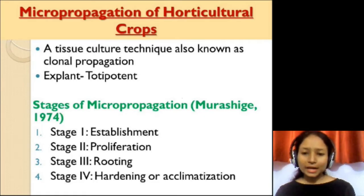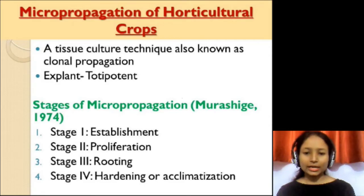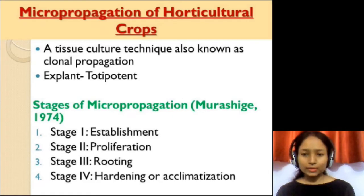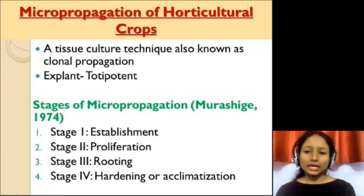The explant, which is the starting material in case of micro-propagation, needs to have totipotency. Totipotency is the capacity of the cell to regenerate into a whole new plant, so the explant used in micro-propagation must have totipotency.